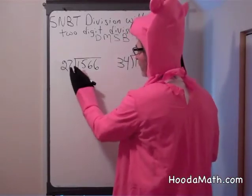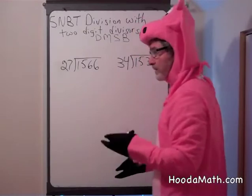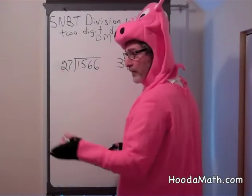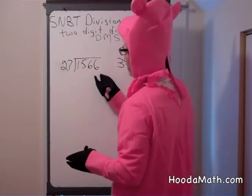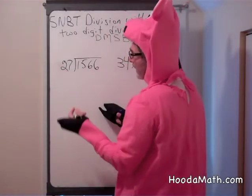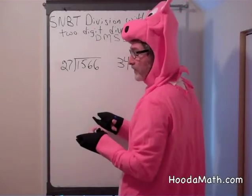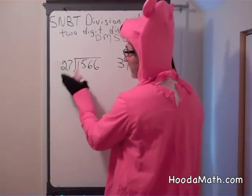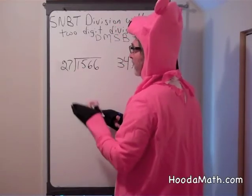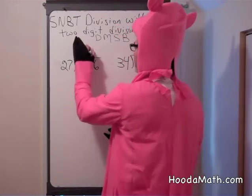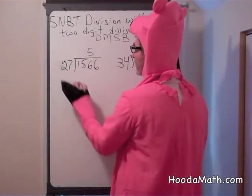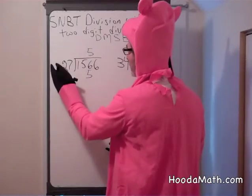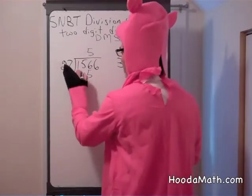27 into 1,566 may seem overwhelming, but first we can say 27 is about 30, a little less than 30. And 156 is about 150, maybe closer to 160. 3 goes into 16 about 5 times. 5 times 7 is 35. Remember, we have 3. 5 times 2 is 10, and 3 is 13.